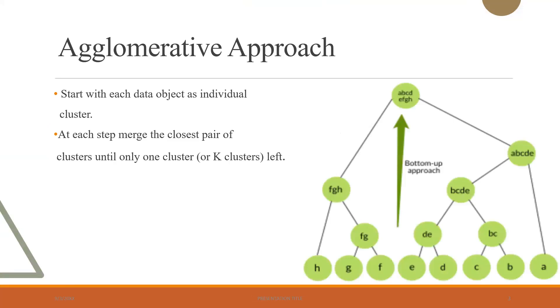So basically, here we start by assuming each data object given in the data as an individual cluster. If we see this picture, let's consider these individual objects as single clusters. Let's say this cluster and this cluster are similar. In the next step, we merge these two clusters into a single cluster, which is FG. This process continues until there is only a single cluster which has all the objects in it. So basically, the agglomerative approach is a bottom-up approach.